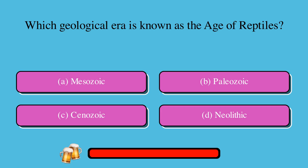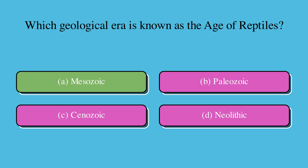Which geological era is known as the age of reptiles? A. Mesozoic, or B. Paleozoic, or C. Cenozoic, or D. Neolithic? The correct answer is A. Mesozoic.